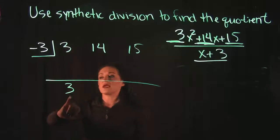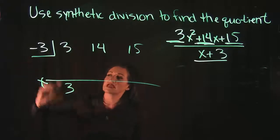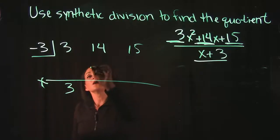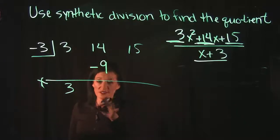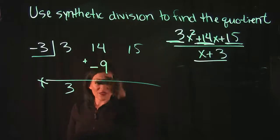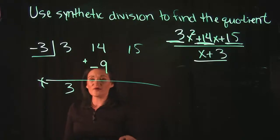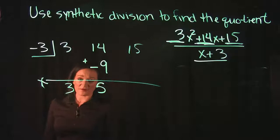Now what you do here: you're going to take that 3, multiply it by your divisor. 3 times negative 3 is a negative 9. Put that under your second number. And then what we want to do is we want to add that column together. 14 plus negative 9, well if we have 14 dollars and we spend 9, we have 5 left.